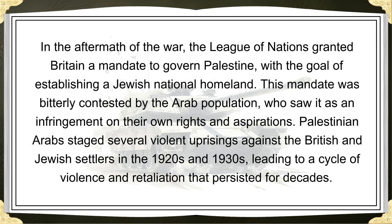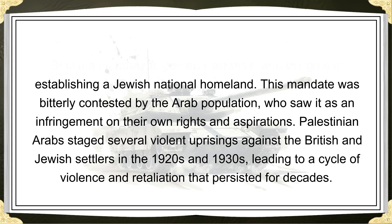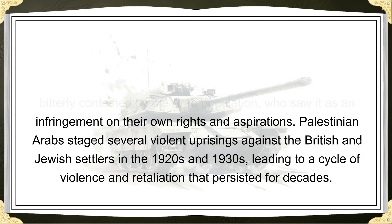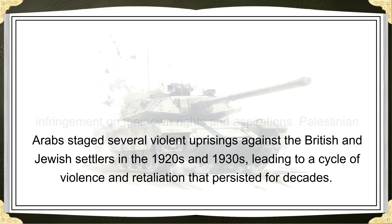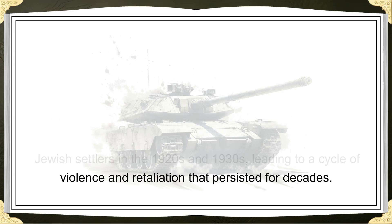In the aftermath of the war, the League of Nations granted Britain a mandate to govern Palestine with the goal of establishing a Jewish national homeland. This mandate was bitterly contested by the Arab population, who saw it as an infringement on their own rights and aspirations. Palestinian Arabs staged several violent uprisings against the British and Jewish settlers in the 1920s and 1930s, leading to a cycle of violence and retaliation that persisted for decades.